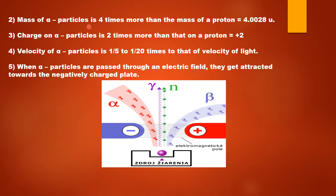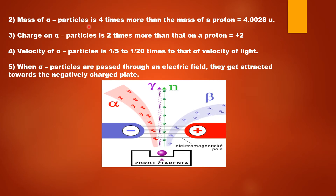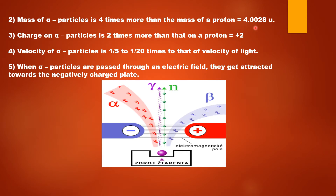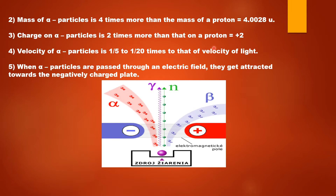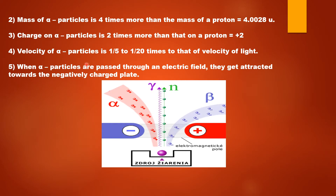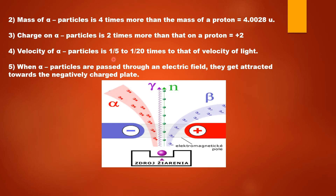The mass of alpha particles is four times more than the mass of a proton, so the mass of alpha particles is 4.0028 daltons. The charge on alpha particles is two times more than the charge on a proton, so the charge on alpha particles is denoted as plus 2. The velocity of alpha particles is less than the velocity of light — it is 1/5th to 1/20th times that of the velocity of light.